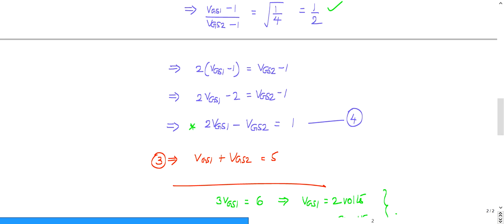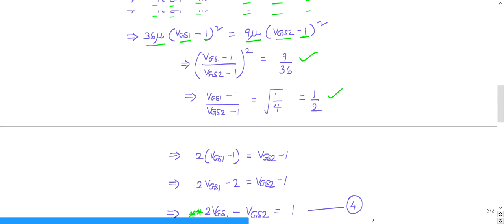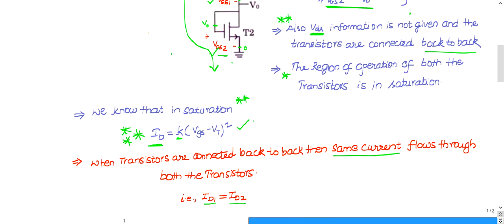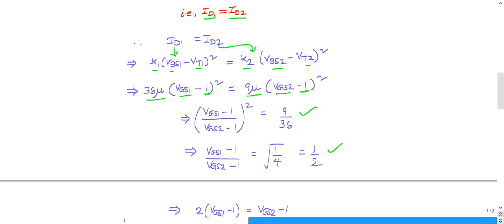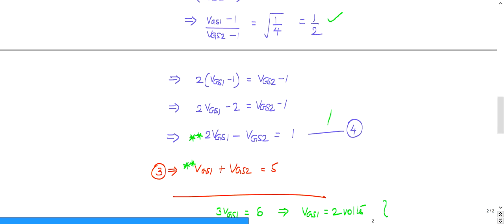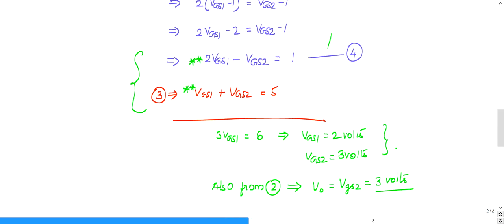Simplifying the current equation gives the relation: 2(VGS1 − 1) = (VGS2 − 1), which reduces to 2·VGS1 − VGS2 = 1 volt. Combined with our earlier KVL equation VGS1 + VGS2 = 5 volts, we solve this linear system. Adding both equations: 3·VGS1 = 6, so VGS1 = 2 volts, and therefore VGS2 = 3 volts.